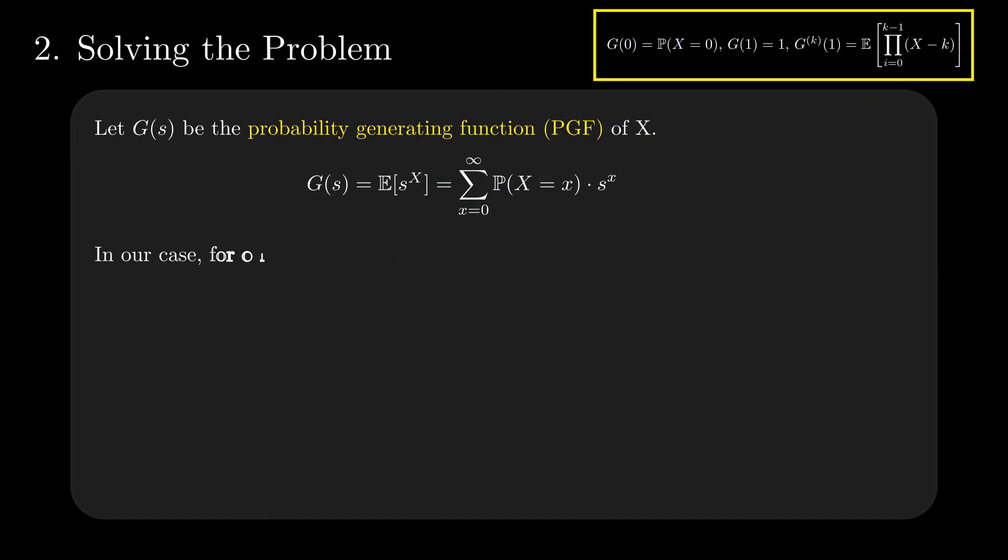In the particular case of our X, we can numerically compute the values of these derivatives. Repeating ourselves, G of 1 equals 1. G derivative of 1 is the expectation of X, which is 1, given from the question.